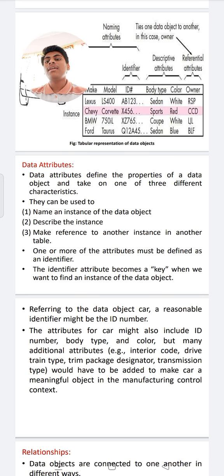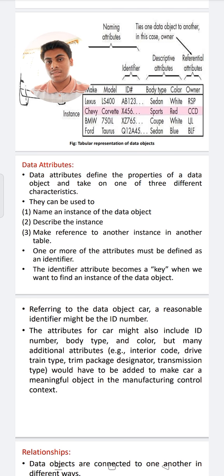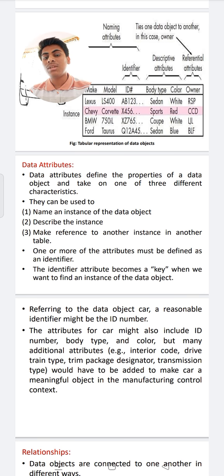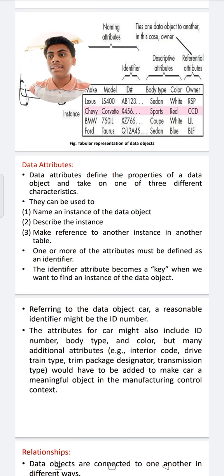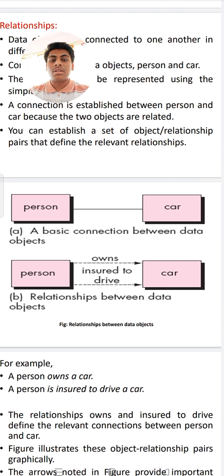Next, relationships. A relationship is nothing but the relation between two entities. In software, a data object connection between one and another can be performed in many different ways — it is called a relationship. The relationship between two attributes, person and car, shows the basic connection between the two objects. Person and car with arrow marks indicate one view: a person can drive a car. For example, a person owns a car, and a person is insured to drive the car. The relationship involves owns, insured, and drive as connections between person and car.